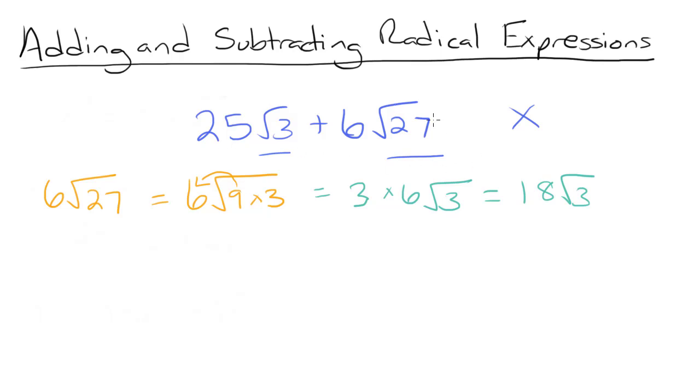So now we can rewrite this problem as 25 root 3 plus 18 root 3. Now our radicals are the same, and we can simply add our coefficients. So 25 plus 18 is equal to 43. So our answer is 43 root 3.